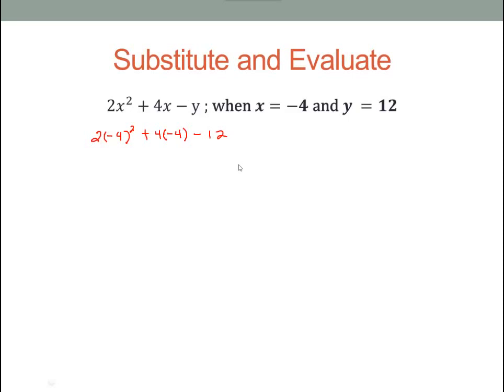Now after we substitute, then we evaluate by using the order of operations. We have parentheses, but there's nothing that I can do inside the parentheses. So my next step would be exponents. Negative 4 squared. That means negative 4 times negative 4, which is positive 16.